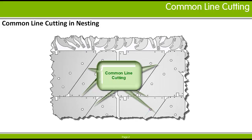Common Line Cutting is the process of cutting two different part edges simultaneously with one cut. This type of cutting is defined by setting the nester to place such parts in the nest so that the gaps between them are equal to the kerf width, instead of using the normal nest spacing for parts. This means that when automatic tooling is applied to the nest, it will be able to create Common Line cuts between those parts.